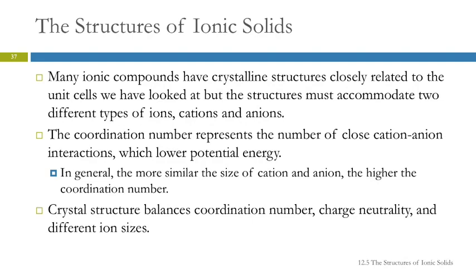In general, the more similar the size of the cation and the anion, the higher the coordination number. Because if they're the same size, they're going to fit together in one of those closest-pack structures much better than if they're widely different in size. So several different factors determine what the structure is for ionic compounds: coordination number, charge neutrality, and ion sizes.